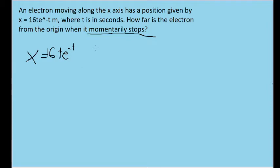Now, if we had a formula for the speed of the electron in relation to time, then we could set that equal to zero.